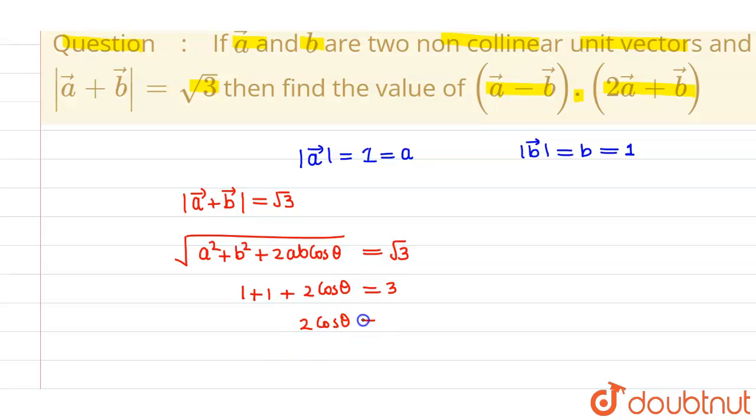From here, I will be getting 2 cos theta equals 1, or cos theta equals 1 by 2. In short, it implies that theta is 60 degrees.